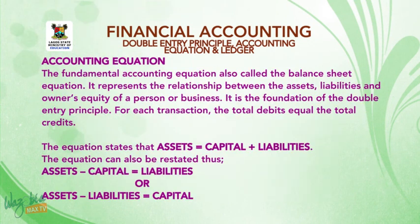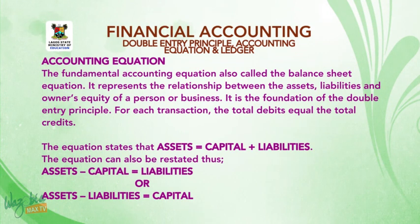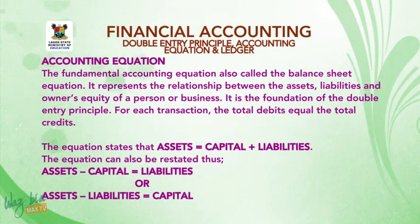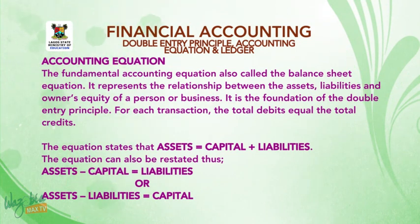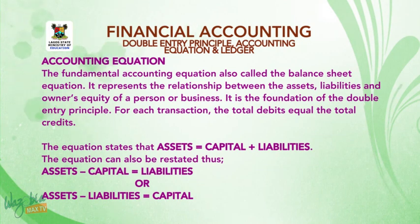We now look at the accounting equation — also called the balance sheet equation. It represents the relationship between the assets, liabilities, and owner's equity of a person or business. It is the foundation of the double entry principle. For each transaction, the total debit equals the total credit. The equation states that assets equals capital plus liabilities. It can also be restated as: assets minus capital equals liabilities, or assets minus liabilities equals capital.